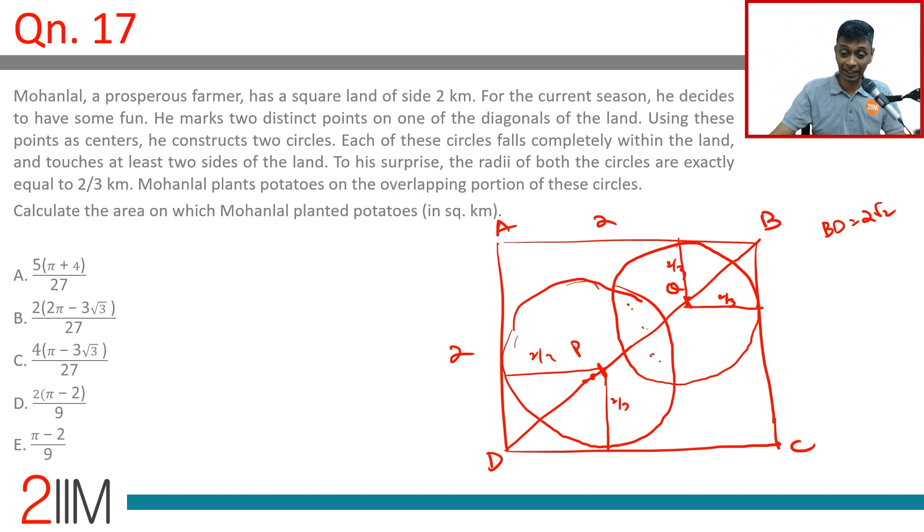Let's find some simple lengths. We know BD is 2√2, a nice square with a 45-degree angle, so DP is 2/3√2. QB is also 2/3√2, lovely, radius is 2/3. And so, 2√2, I'm going to write it as 6√2/3. This is 2√2/3, this is 2√2/3, overall distance is 6√2/3, or PQ is also 2√2/3.